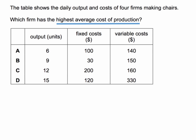The table shows the daily output and costs of four firms making chairs, and the question is: which firm has the highest average cost of production?